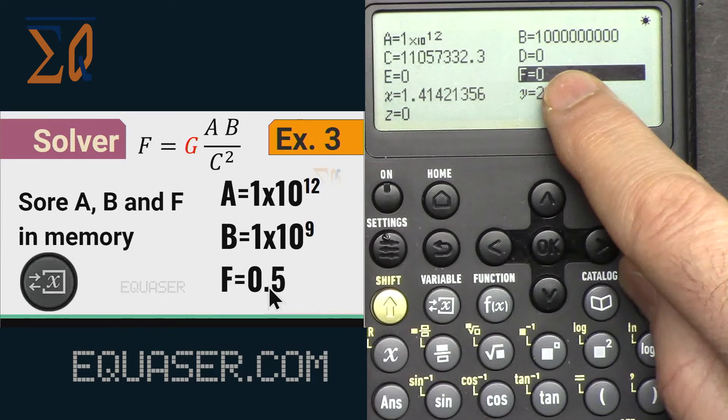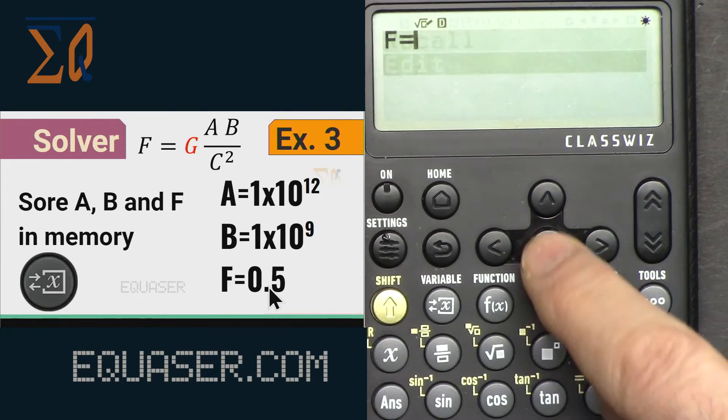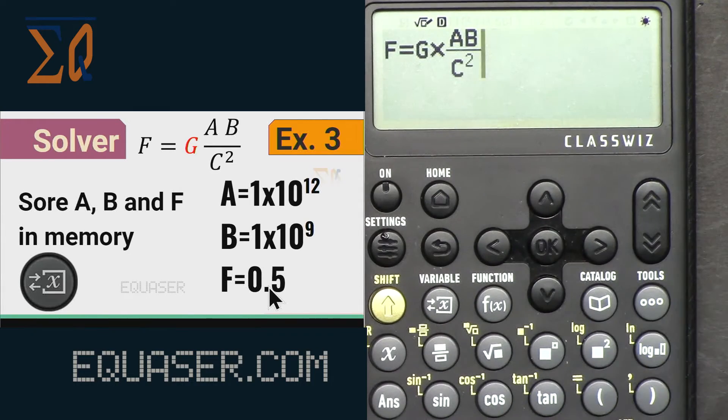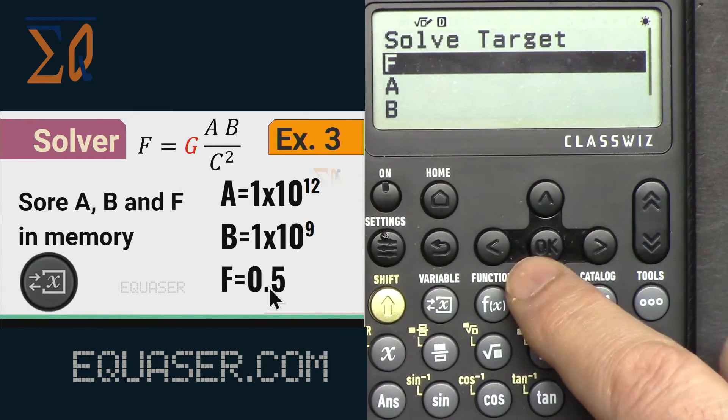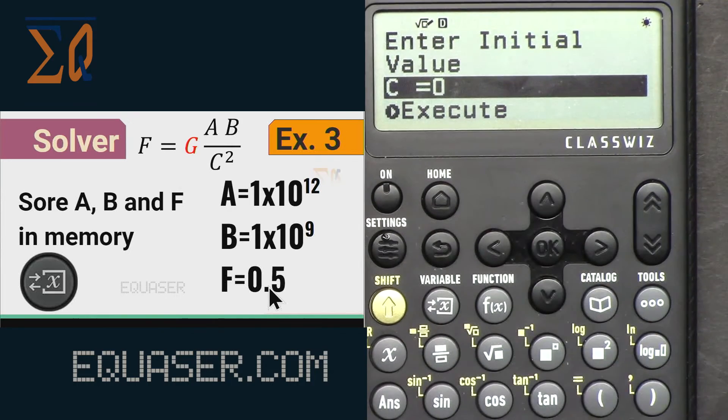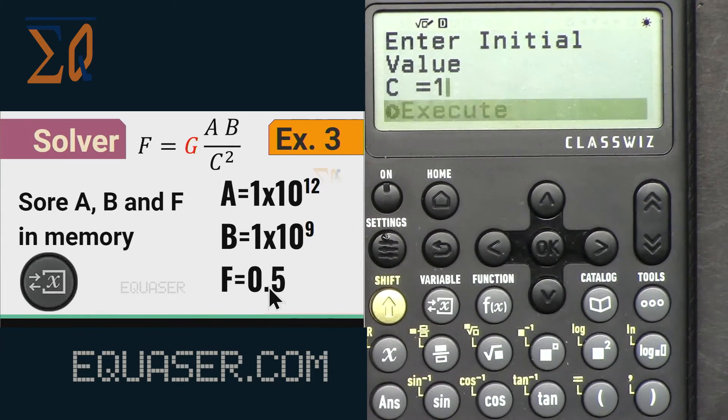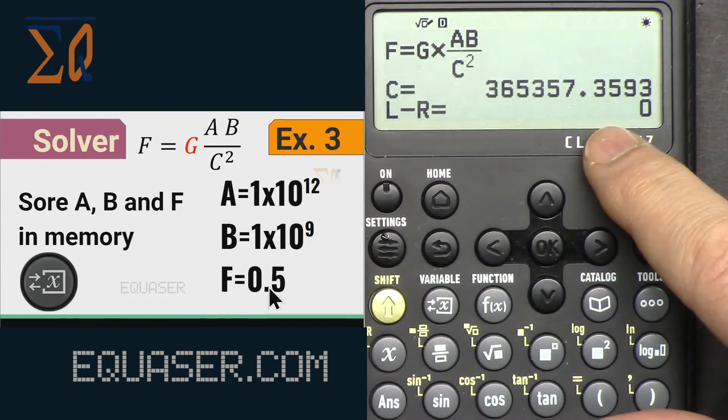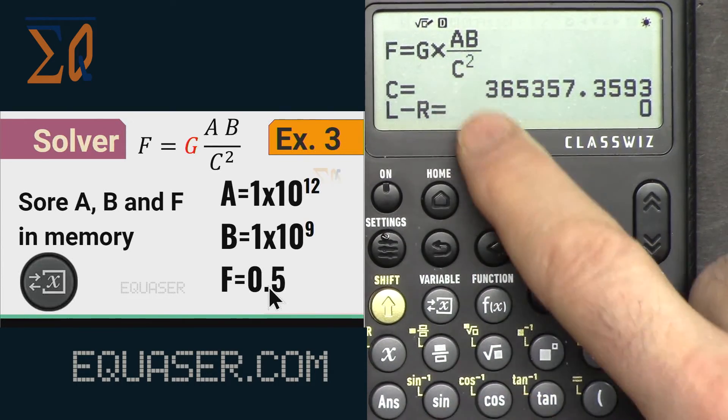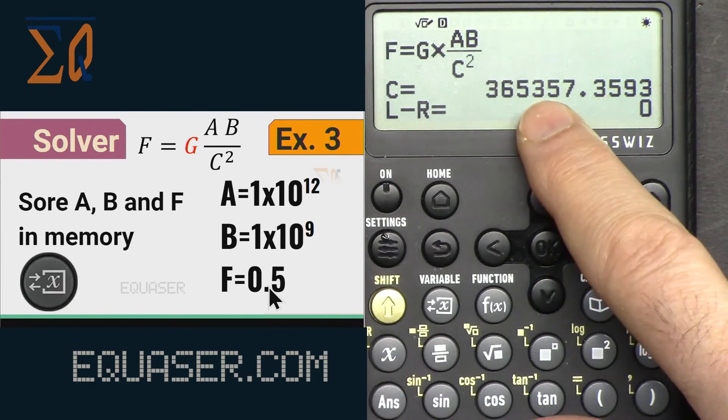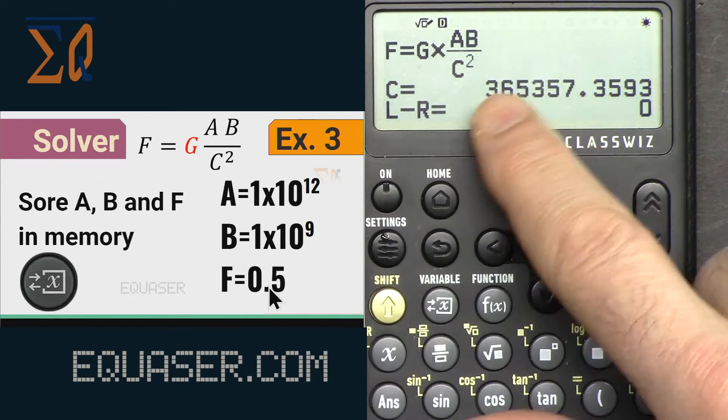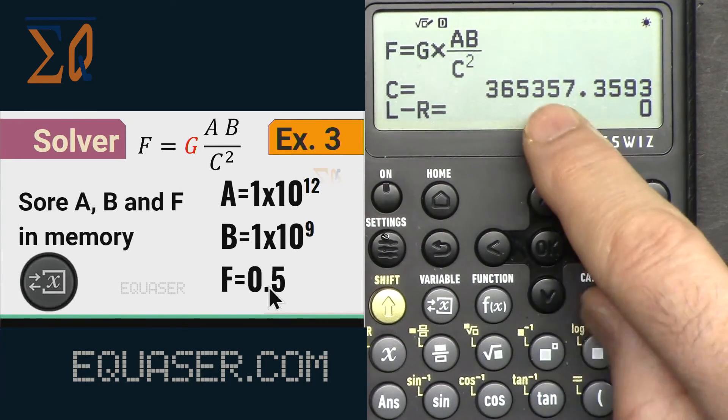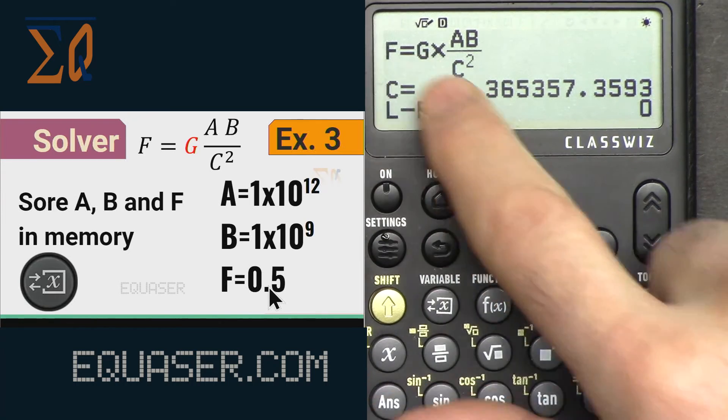Now if I press all clear, press equal. Now let's select c, and initial value for c is 1, and then execute. Now this is a correct answer and the distance between them is 365,353. So that's 365 kilometers with this amount of force that we have.